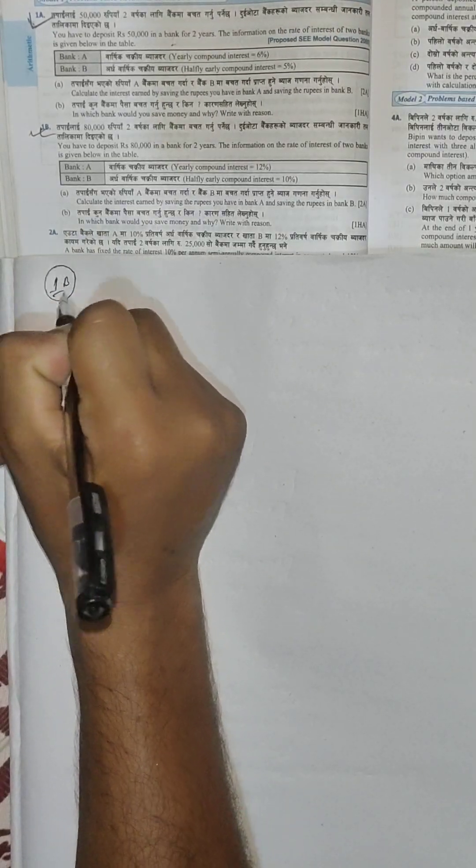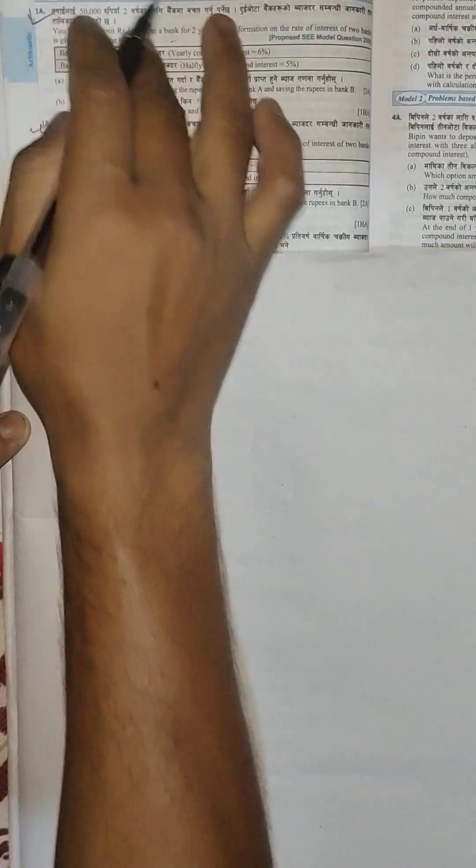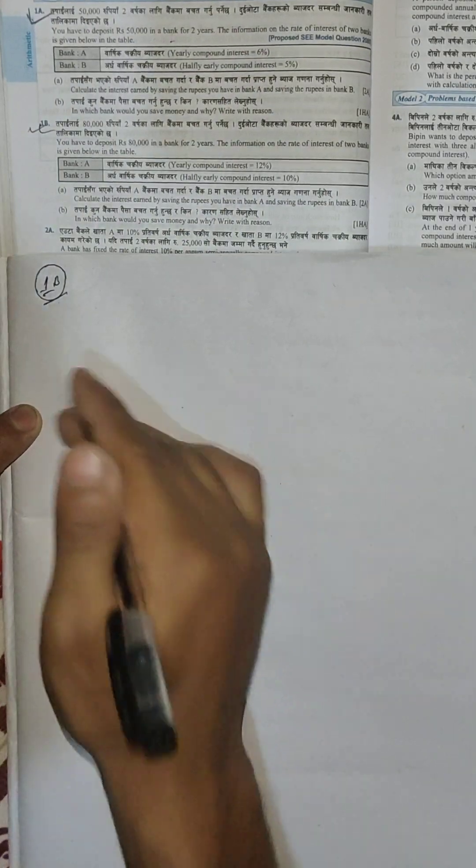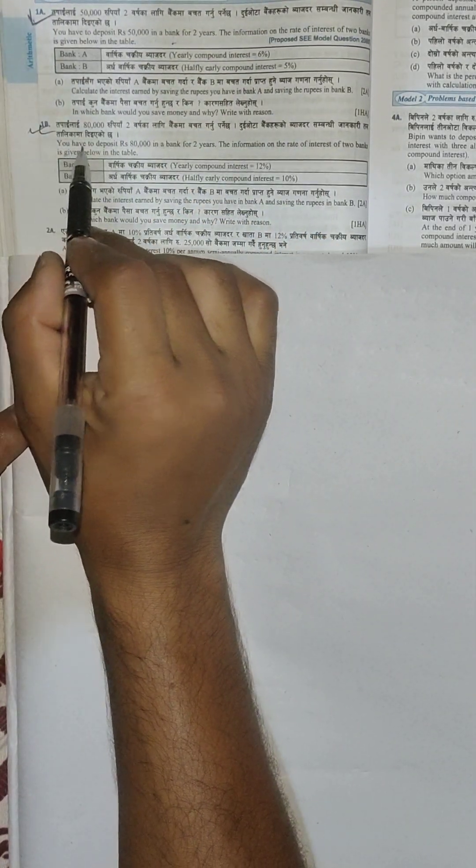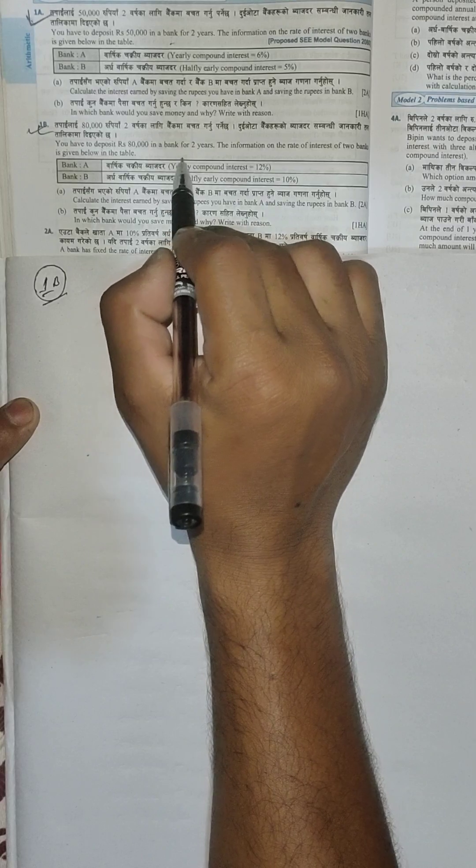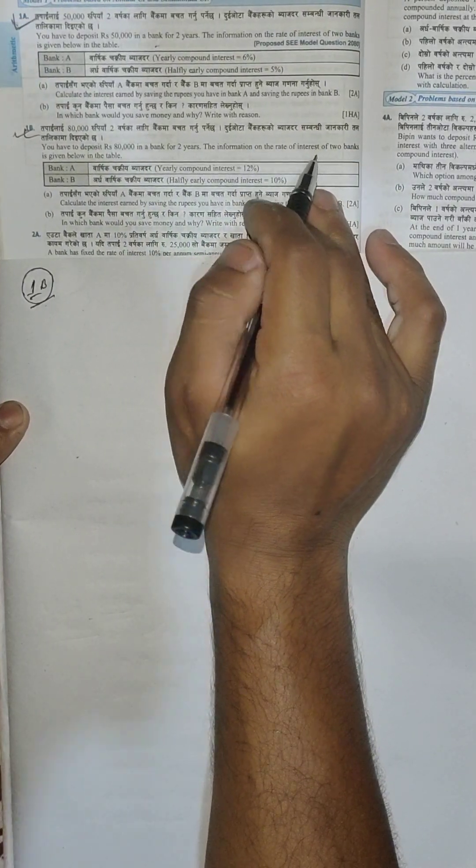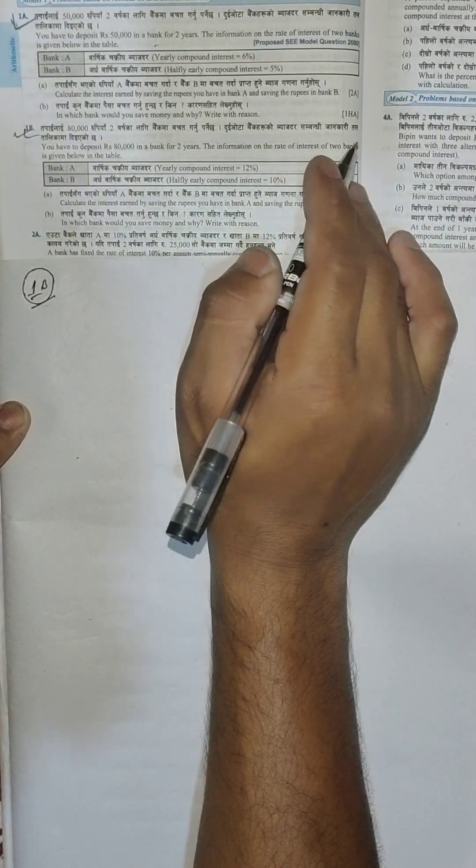This is a compound interest question. The question states: you have to deposit Rs. 30,000 in your bank for 2 years. First, the information on the rate of interest of 2 banks is given below in the table.